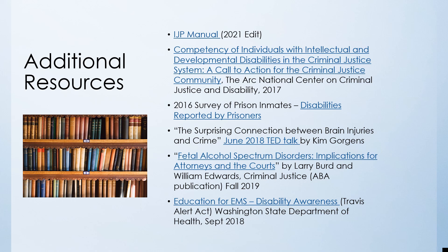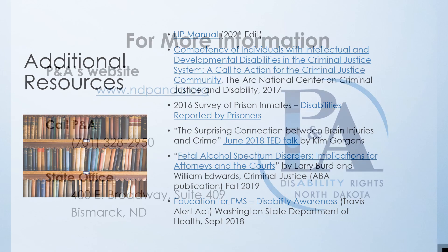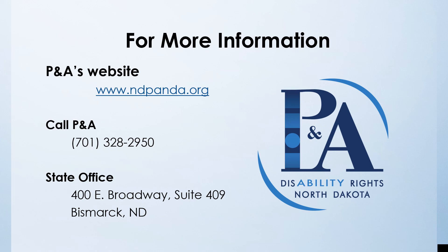Additional resource information includes the IJP manual, information regarding competency, surveys of prison inmates, information about connections between brain injuries and crime, additional information regarding fetal alcohol syndrome, and disability awareness. All information regarding individual justice planning can be found on P&A's website at www.ndpanda.org. You may also call centralized intake staff at 701-328-2950, visit the state office at 400 East Broadway, Suite 409 in Bismarck, or visit one of nine additional offices across the state. Thank you for your time today and we look forward to contact with you regarding individual justice planning.